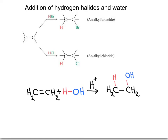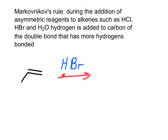This reaction of addition of water is called hydration of an alkene. For this reaction to take place, it is required to use a catalyst that is usually a strong solution of sulfuric acid. The product of hydration of an alkene is an alcohol.